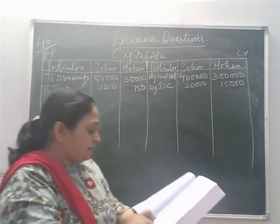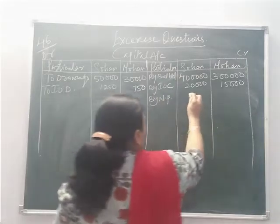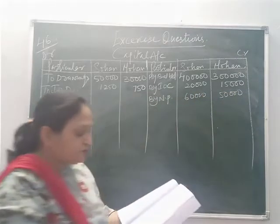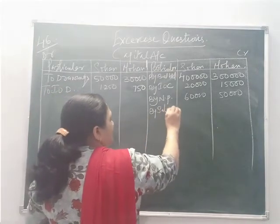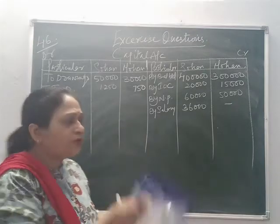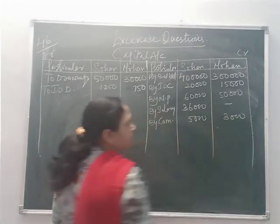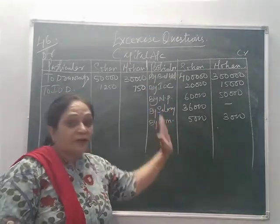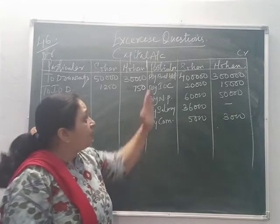Share of profits for the year ending 31st March: By net profit — 60,000 for Sohan and 50,000 for Mohan. Partner's salary is given only to Sohan, so By salary: 36,000 credited to Sohan's account and dash for Mohan. Commission: 5,000 for Sohan and 3,000 for Mohan. Interest on capital, salary, and commission are all credited to the partner's capital account and debited to the P&L account, because they are expenses to the firm but income to the partner.